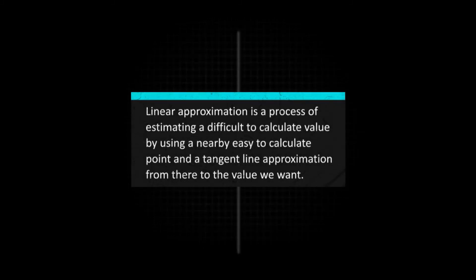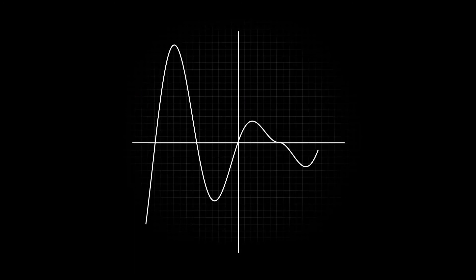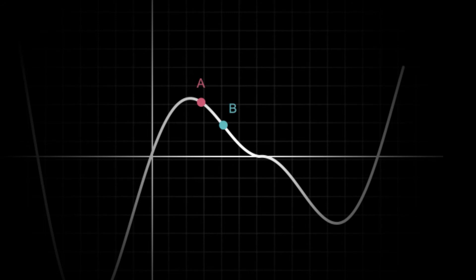Linear approximation is a process of estimating a difficult-to-calculate value by using a nearby, easy-to-calculate value and a tangent line approximation from there to the value we want. Let's consider a random curve. Our goal here is to see how this process works. So we will try to avoid getting into any concrete calculations. For now, let's look at two points, a and b. We will assume that a is easy to calculate for our function and b is difficult, like how square root of 9 was easy to calculate and square root of 10 was difficult in our earlier example.